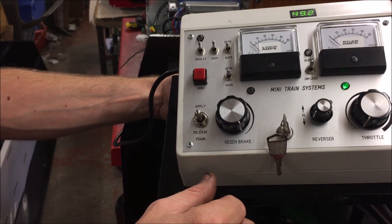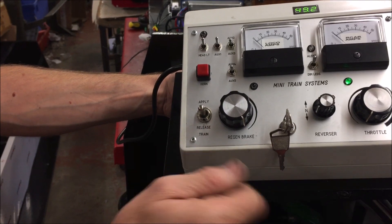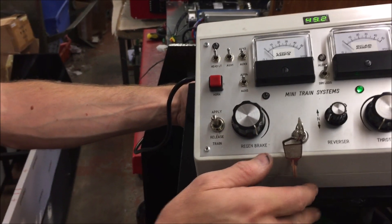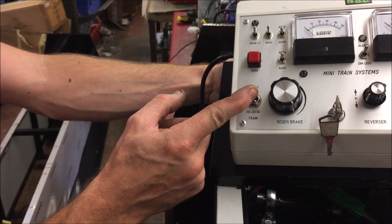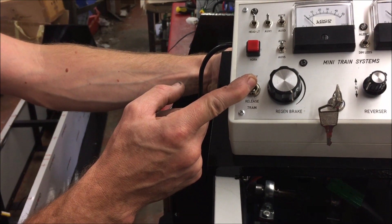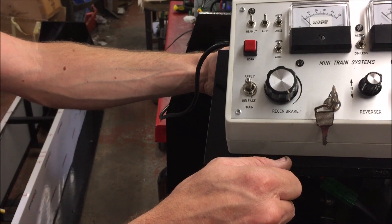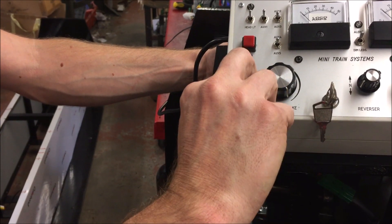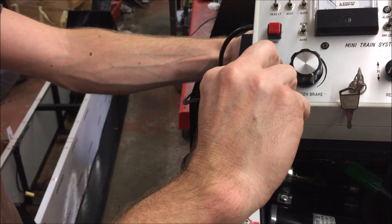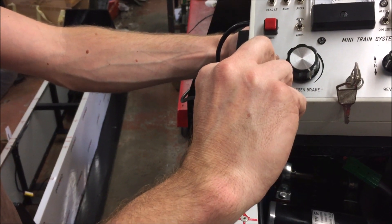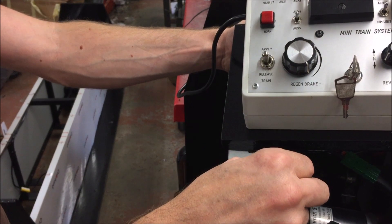I think that's pretty much it. Oh, the last thing is the braking. So once you're in the station and you want to apply the braking, you have apply, which will apply a handbrake. That's now on. When you want to release the brake, pull it back. Brakes will now be off.